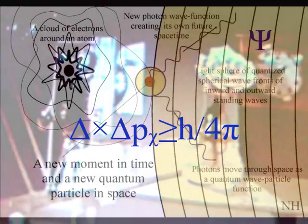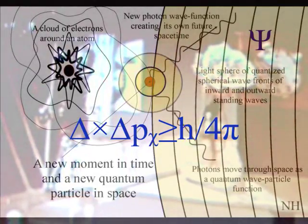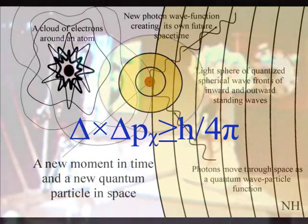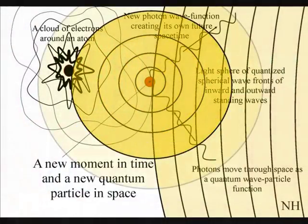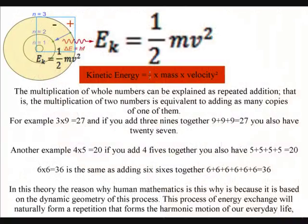It is because the future is unfolding with the spontaneous absorption and emission of photon energy forming a repetition of the same energy levels that we have two times half the mass with the velocity in the equation for kinetic energy.